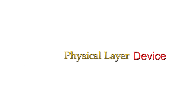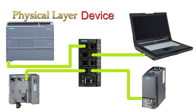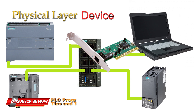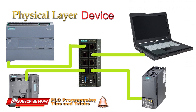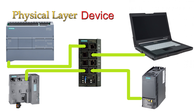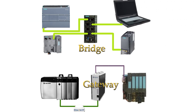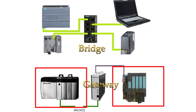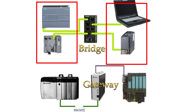Ethernet devices consist of PLCs, computers, HMIs, or any devices connected to the network via internal or PCI-based network cards. Switches and routers act as directors of the network and can connect multiple computers or networks together to enable communication. Gateways and bridges are used to connect multiple Ethernet networks together. A gateway connects two dissimilar networks, while a bridge connects two similar networks so they appear as one network.